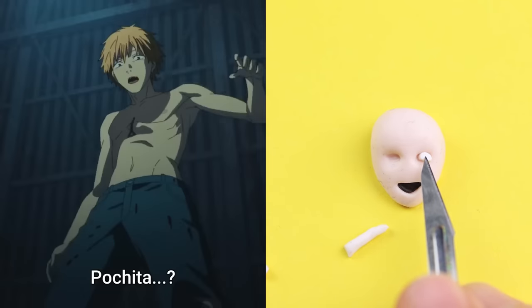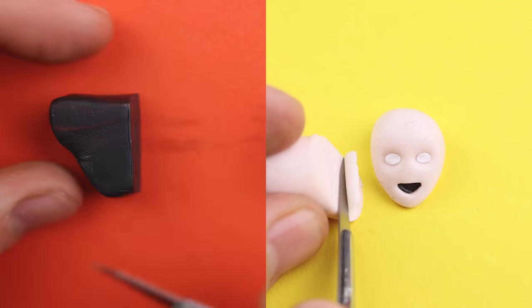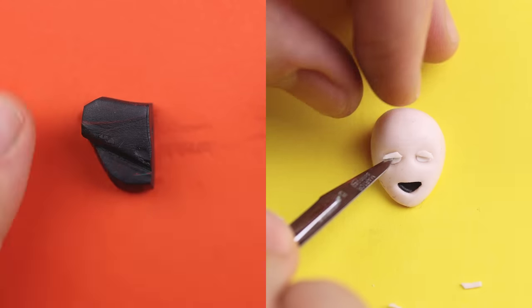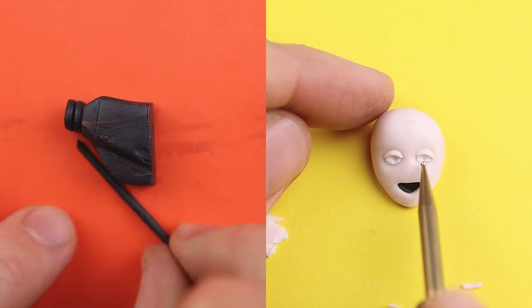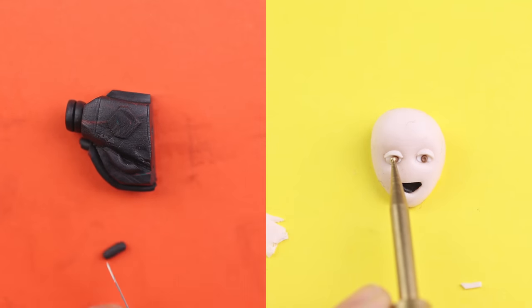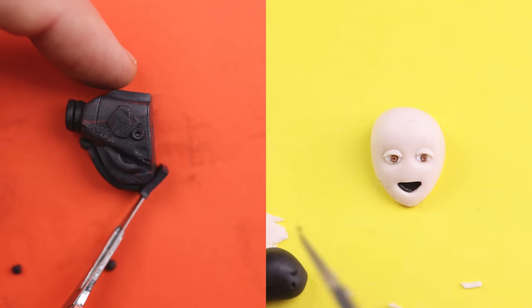For the transformed head, we will create the handle, or two handles of the chainsaw, together with the blade after oven hardening. The mouth is represented by two red elements.